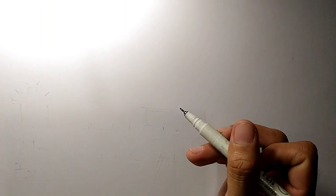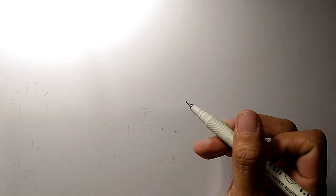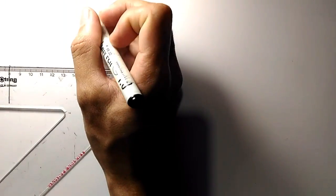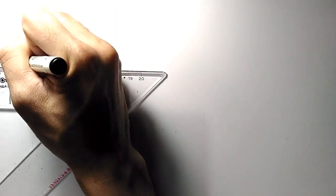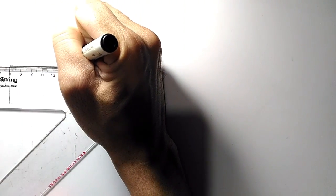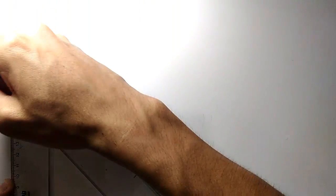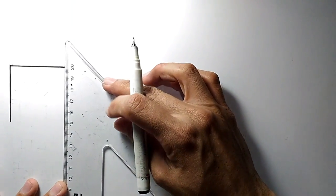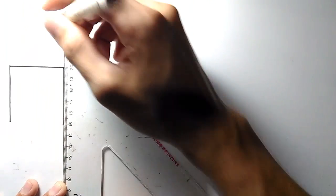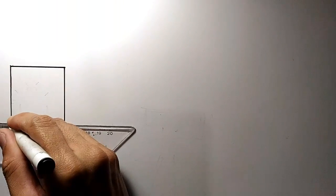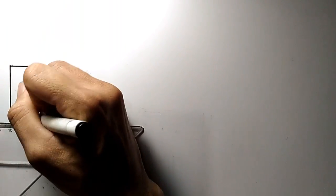Hello, today we're going to make a one-point perspective of an existing room. First we have to plot our existing room or the floor plan. Today I'm going to use a scale of 1 to 100. Our room is 5 by 5 meters. We're going to use the metric measurement for more accurate detail.